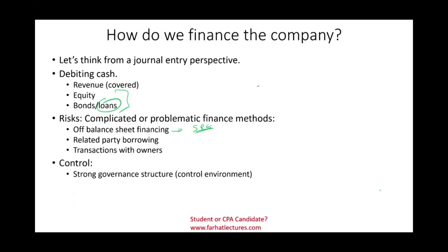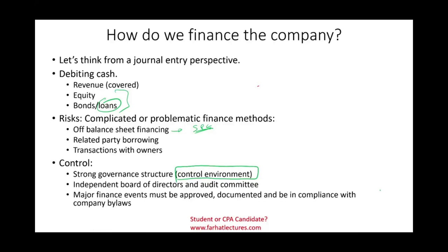What are the controls? Strong governance structure — we should have a strong, independent board of directors. Every time the company needs to borrow money or issue stocks, those are major transactions that require board approval. If you have an independent audit committee, you have good controls, because these transactions need approval, signatures, and discussion — not some low-level manager making those decisions. As long as we have a good control environment where people at the top are ethical, we minimize risk. These events need to be documented and in compliance with the company's bylaws.